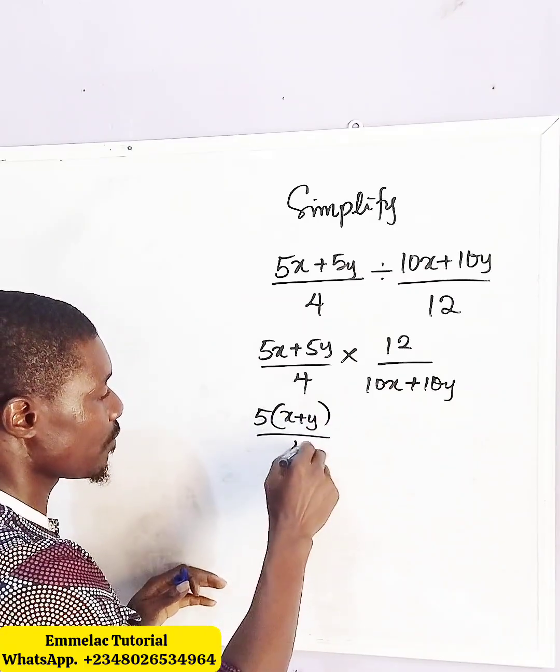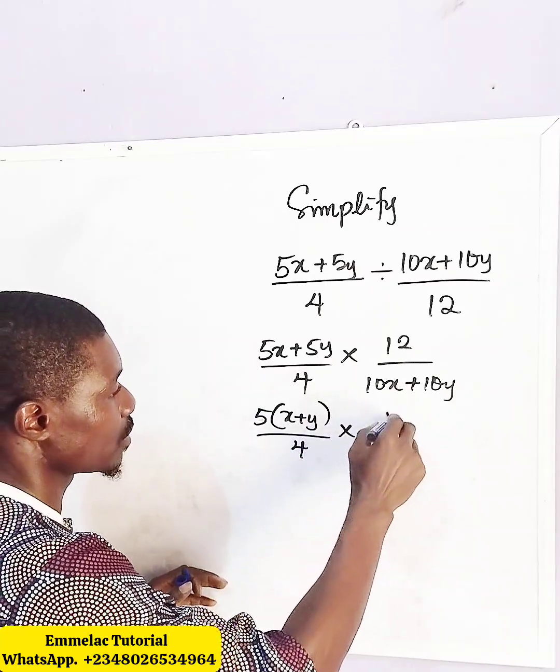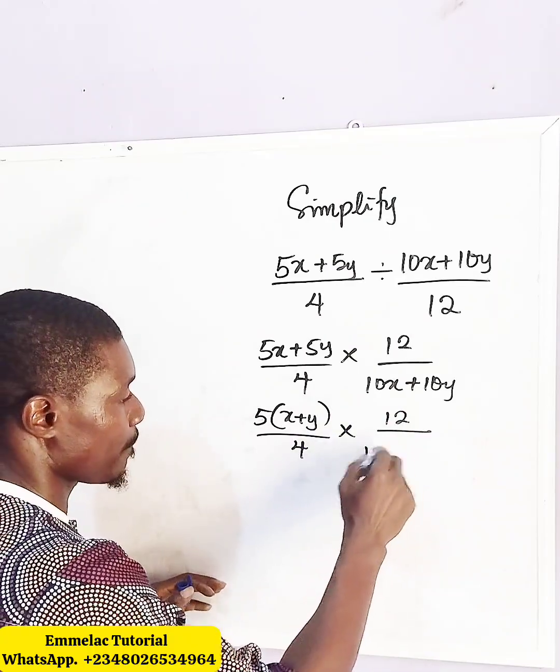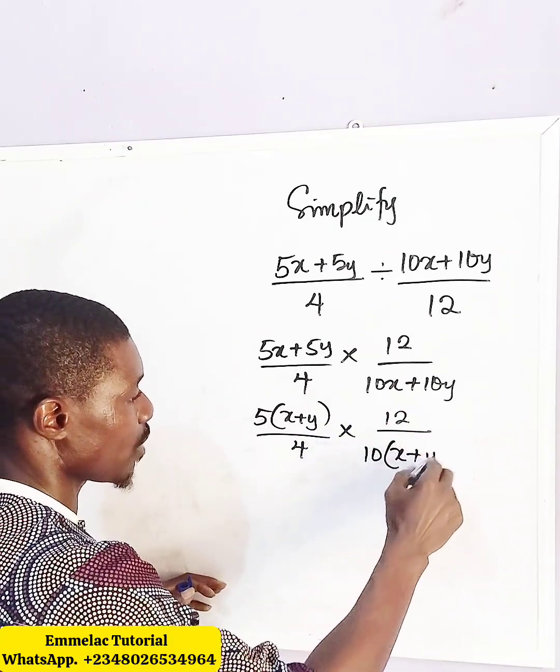Then times 12 all over, what is the common factor here? That is 10, then x plus y.